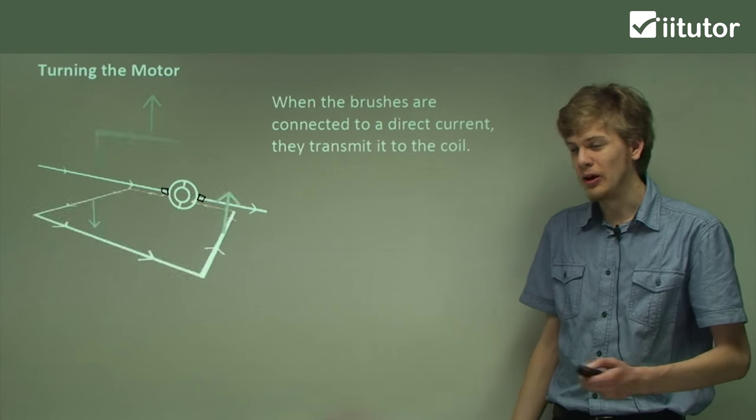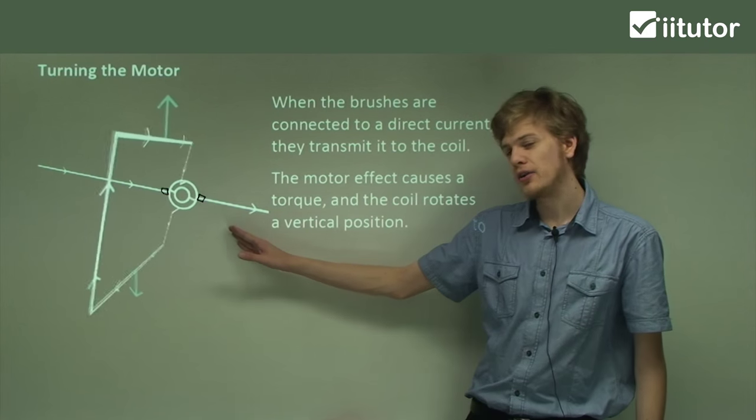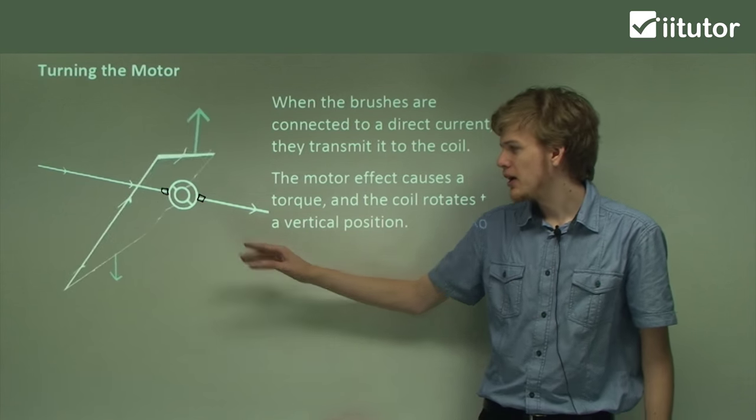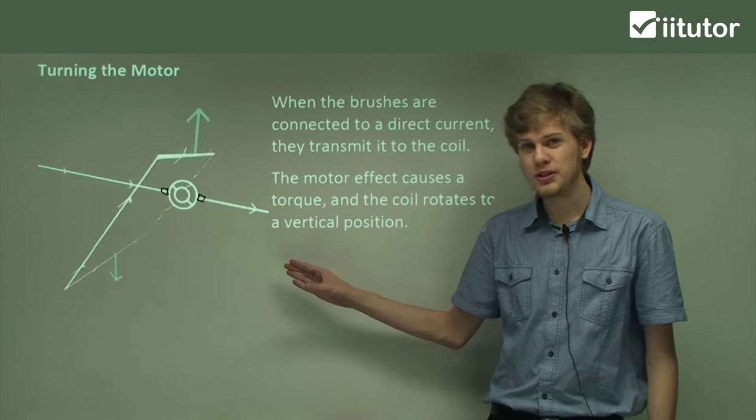So what happens? As we can see, the motor effect causes an upward force to act on the right side of the coil and a downward force to act on the left side of the coil. And this pulls the coil into a vertical position.